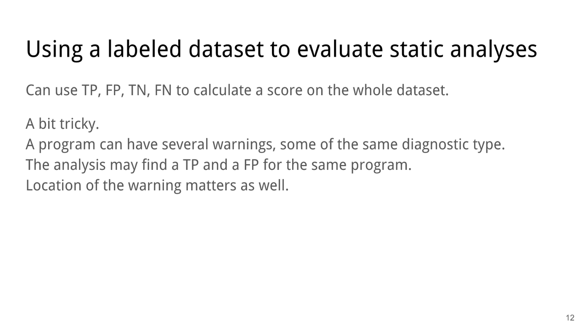So some of the issues are that a program in that data set can have more than one warning, right? And some of the warnings in the same program may even be of the same diagnostic type. So this means that an analysis may find a true positive and a false positive for the same program. So we need to decide how to score it overall for the program. And on top of that, we also need to care about where the warnings appear in the source.